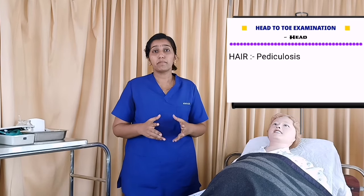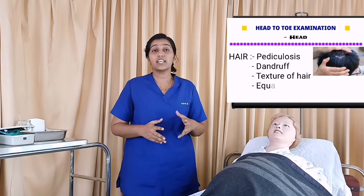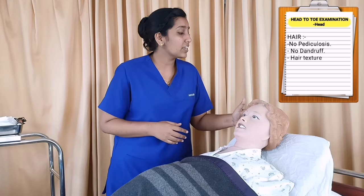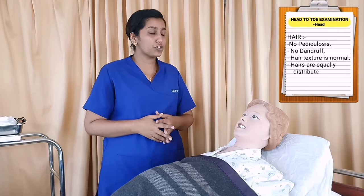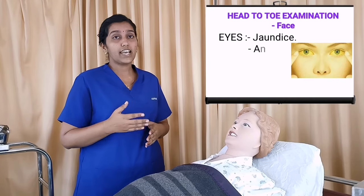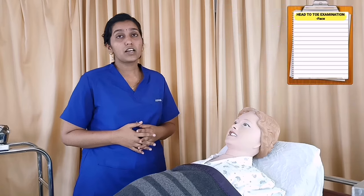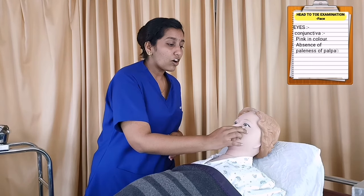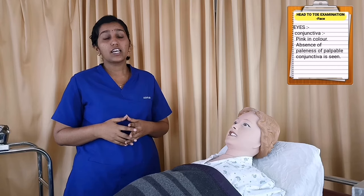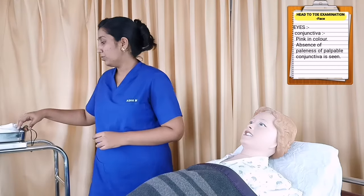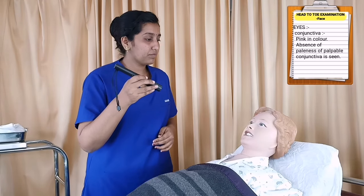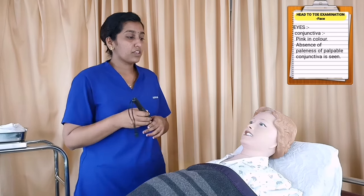Starting with hair: hairs are assessed for pediculosis, dandruff, texture of hair, and equal distribution. Mrs. Priyanka doesn't have any pediculosis or dandruff; texture of hair appears normal and there is equal distribution. Moving down to eyes, we check for jaundice, anemia, and periorbital puffiness. Mrs. Priyanka doesn't have yellowish discoloration of sclera; absence of paleness of palpable conjunctiva is seen. Pupillary reaction is checked using a torch, moving from outer canthus to inner canthus. Mrs. Priyanka has normal pupillary reaction.